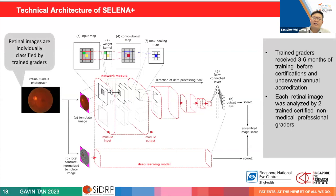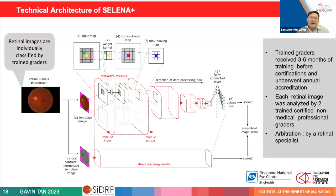The ground truth was provided by graders with significant training, with arbitration by medical professionals when graders disagreed. We found that using this data, the algorithm could evaluate images from our own screening program with good sensitivity and specificity. A particular benefit was sensitivity for the worst forms of disease — the algorithm was less likely to miss pathology than humans, because machines can be reproducible and infallible in that sense.